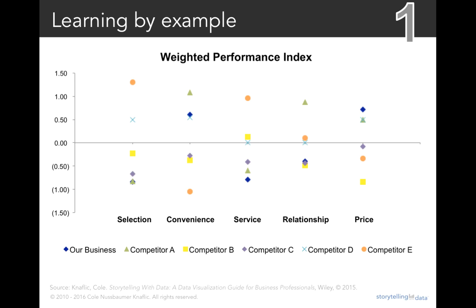This first example is the weighted performance index. Imagine you work for a US retailer and you've recently surveyed your customers along a number of dimensions — shown along the bottom: selection, convenience, service, relationship, and price. We're plotting the weighted performance index, a summary measure from the various survey items in each category. We have the index for our business, denoted by the blue diamond, as well as a number of competitors denoted by the other colored shapes. I use this example often because it's particularly good for pointing out how easy it is to create a graph without thinking about what we want our audience to do — how do we want them to process it, and how do we make it easy?